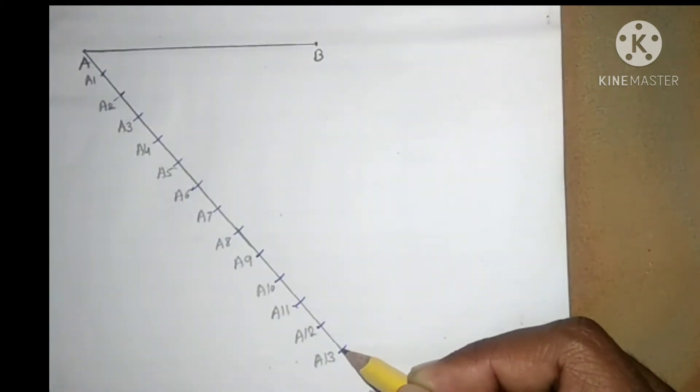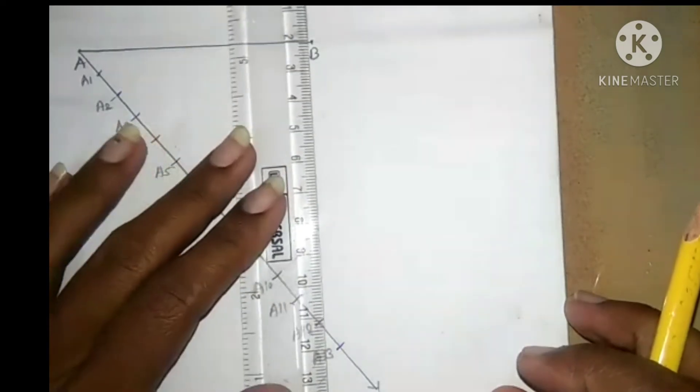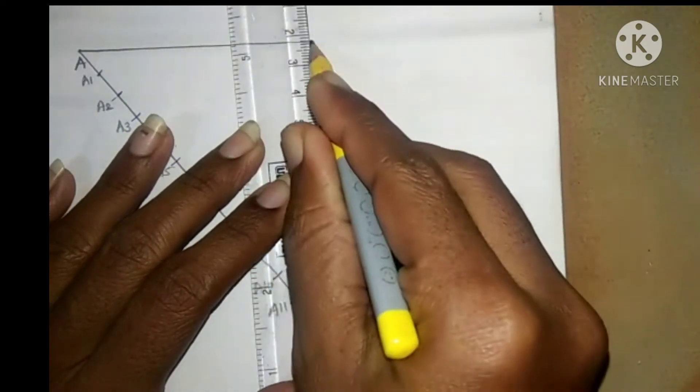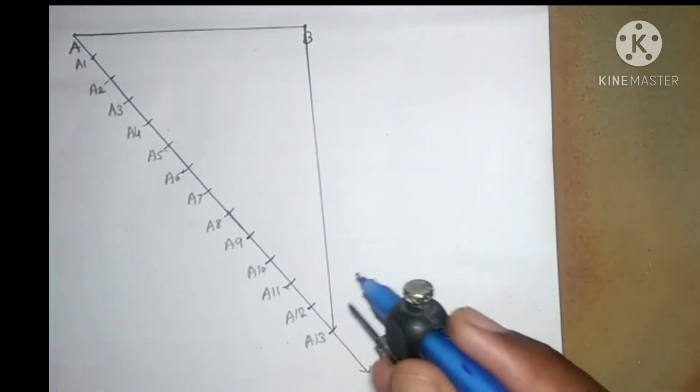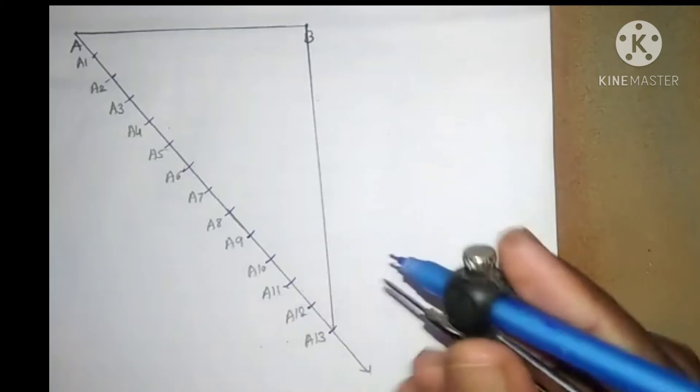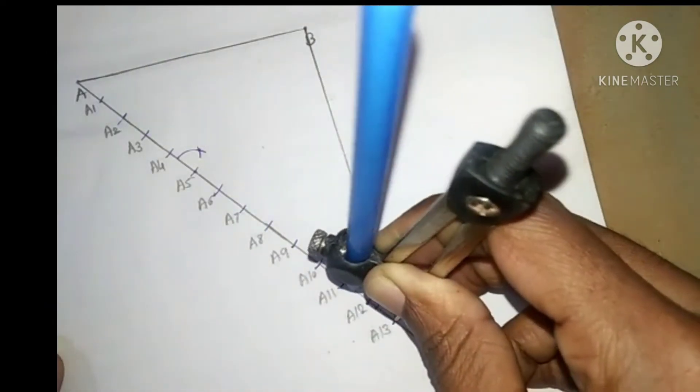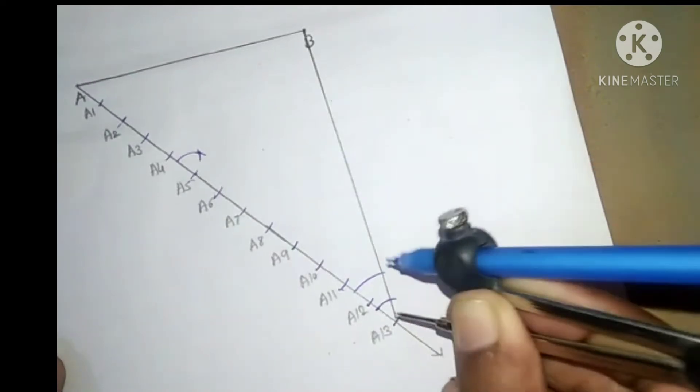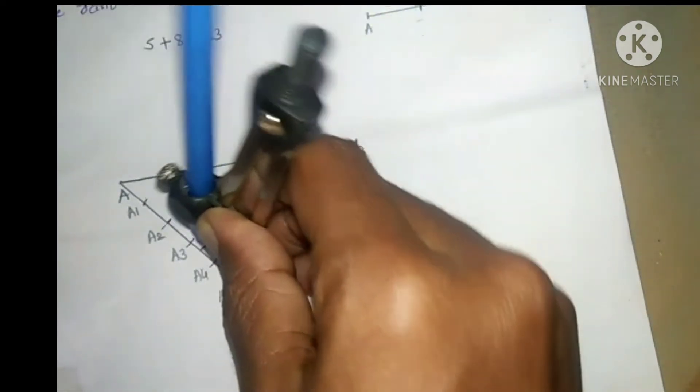Join the point A13 to point B. Using compass, draw an arc with any measurement from the point A13. With the same measurement, draw an arc from the point A5.